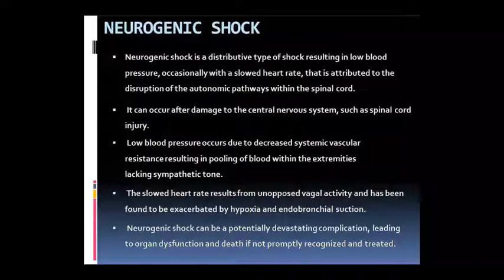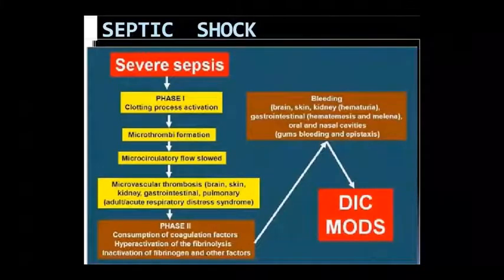Neurogenic shock potential devastating complication ke roop mein dikhai dega jis se ki organ dysfunction ho sakta hai, death bhi ho sakti hai agar aapne usse theek nahi kiya. Yeh last - septic shock jo sabse important hai, severe sepsis ho jata hai. Isme phase one mein to clotting process activate ho jaayega, micro-thrombi ban jaayengi, micro circulation isse dheema ho jaayega. Thrombosis ki wajah se brain, skin, kidney, GIT, pulmonary wagera ke andar asar padega, ARDS wagera dikhai dega. Phase second mein consumption of coagulation factors hone lagega, fibrinolysis hyper-activate ho jaayega, fibrinogen inactivate ho jaayega, doosre factors bhi dikhai denge.